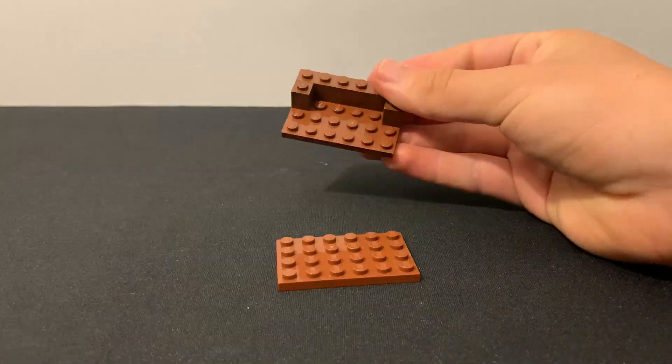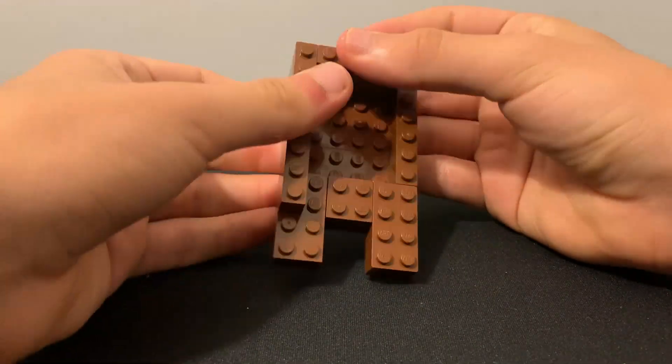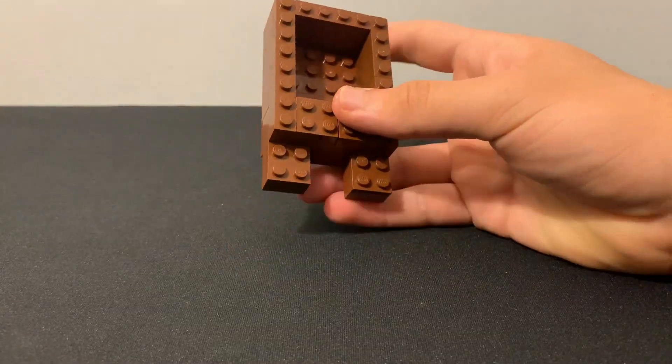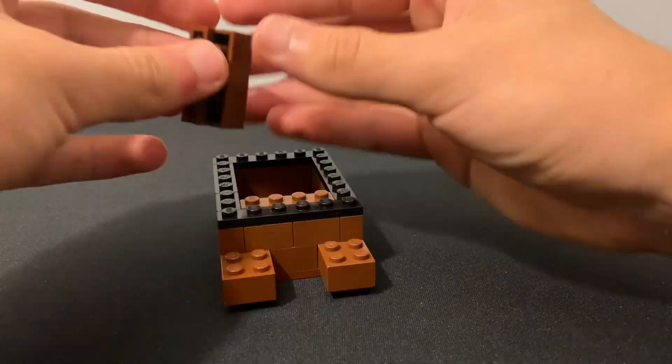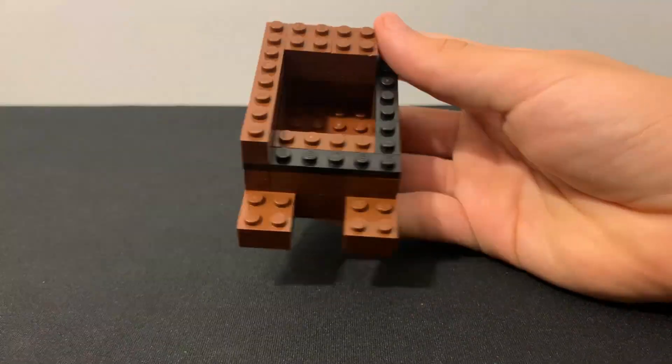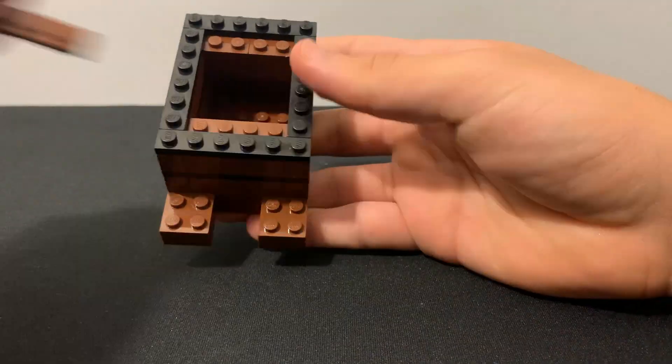The next mob I'm going to be recreating is the armadillo. I spent way too much time trying to figure out how to get the armor plating on this guy. Eventually, I just settled with a bunch of black 1x1 plates in between each section. The rest of the body was basically just stacking brown bricks on top of each other with the 1x1 plates in between, of course.